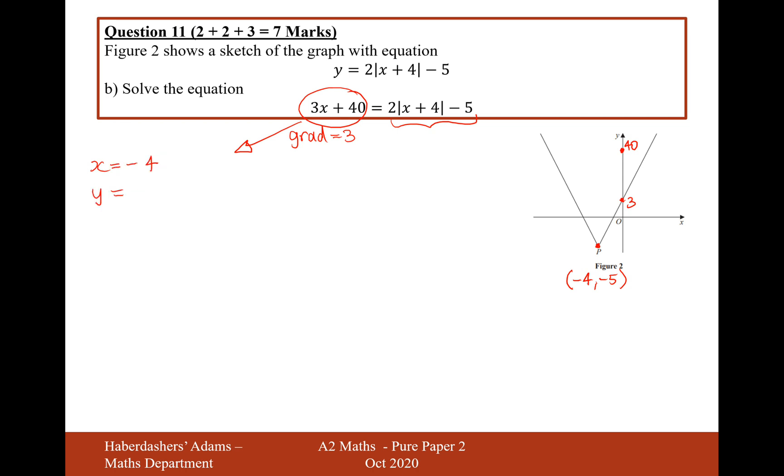If I use that equation and work out when x is minus 4, what my y value is going to be, that's going to be minus 12 plus 40, which makes it 28. So it's going to go through the coordinate minus 4, 28. Well, not to scale, but I need to make sure it's steeper than this gradient here.